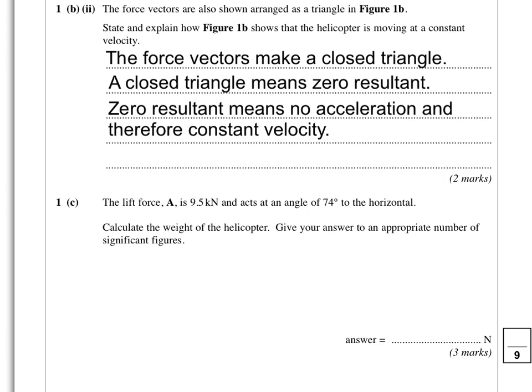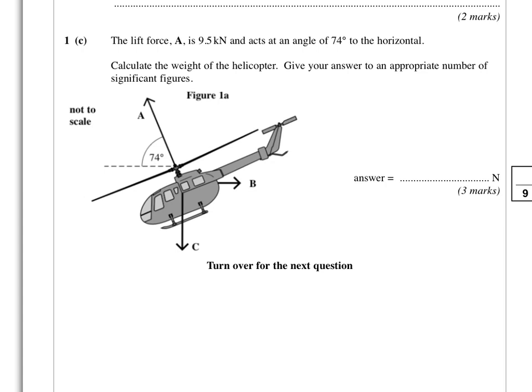The last bit of the question is our calculation. We've got from the helicopter, the lift force is 9.5 kilonewtons and acts at an angle of 74 degrees to the horizontal. And we've been asked to calculate the weight of the helicopter and also give our answer to an appropriate number of significant figures. So we'll pop our picture of the helicopter in there. I hope you can see that what we really need to do is resolve vertically. We've got the lift force here, which is 74 degrees to the horizontal. We've been asked to find the weight down. If we resolve vertically, we can get the vertical component of this lift acting in this direction, and that obviously balances out the weight. So we're after the vertical component of this lift force.